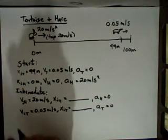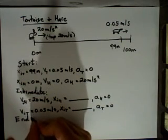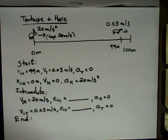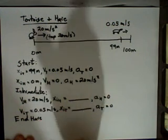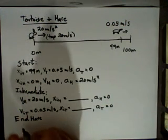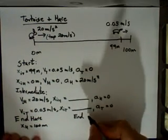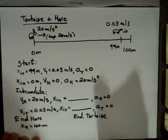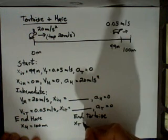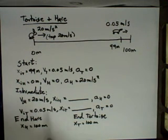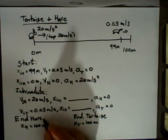Now, what about the end of the problem? Well, when we get to the end of the problem, there are different ways of looking at this. We want to know who was going to reach the 100-meter line first. So there are really two different endpoints in this problem. There's the endpoint for the hare, which is when the position of the hare equals 100 meters, and there's the endpoint for the tortoise, when the position of the tortoise equals 100 meters. And the whole question is, which one of these happens first? So we would like to know which occurs at the earlier time.